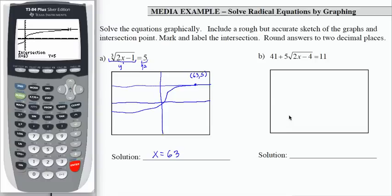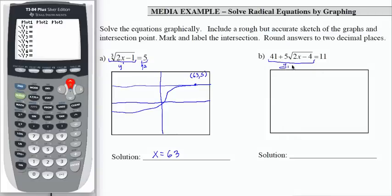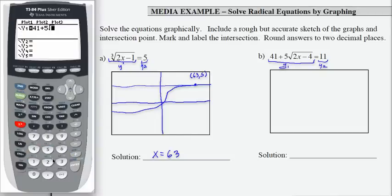All right let's take a look at part b. I've got 41 plus 5 times the square root of 2x minus 4 equals 11. So let's go to y equals clear what we have there and again I'm going to enter left side is y1 and right side is y2. So I've got 41 plus 5 times the square root of 2x minus 4 and end my radical. Go down to y2 and enter 11.